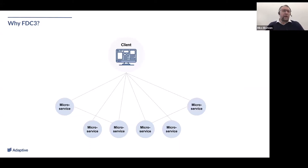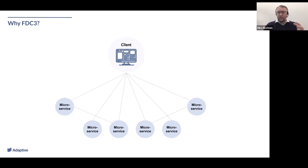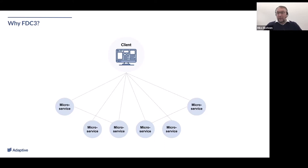Why FDC3? For a long time we've been building front-end systems this way: you have a bunch of microservices and then a big monolithic application that aggregates all of those services together and displays a single front end to the user — that might be a single page web application or a rich WPF application on the desktop. This approach has some advantages: there's a single code base, it's often easier to deploy. But it also becomes unwieldy over time and it's sometimes difficult for lots of people to work on the single application together.